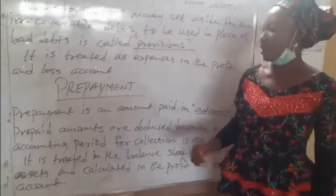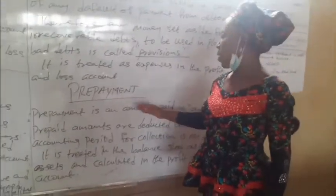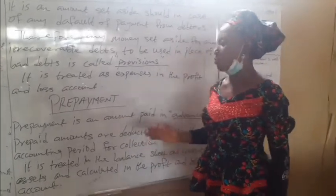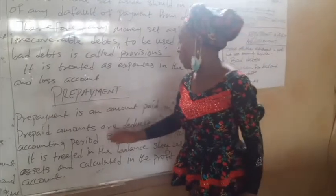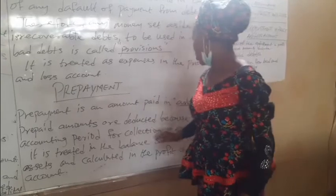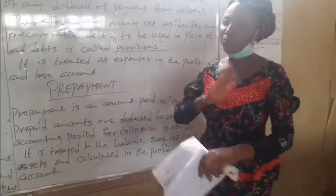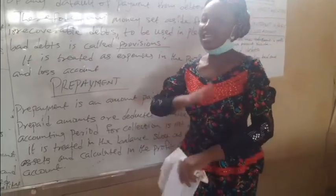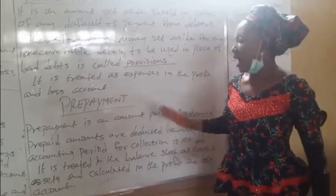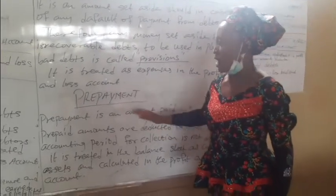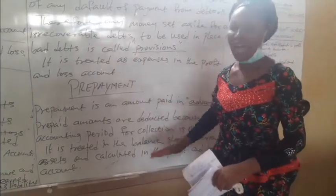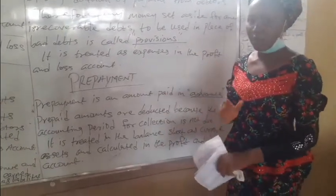Let's move to prepayment. Prepayment is an amount paid in advance. Prepayment amounts are deducted because the advantage period for collection is not yet due. Prepayment is treated as a current asset in the balance sheet.